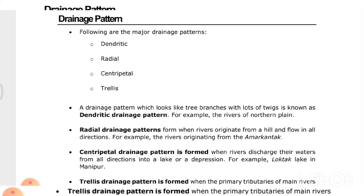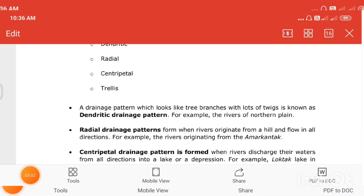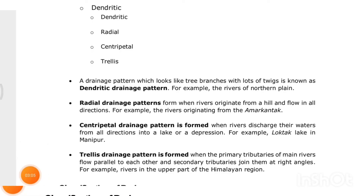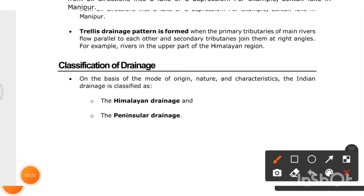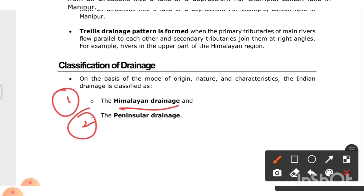The trellis drainage pattern is formed when the primary tributaries of the main river flow parallel to each other, and secondary tributaries join them at right angles — for example, rivers of the upper Himalayan region. On the basis of mode of origin, nature, and characteristics, Indian drainage is classified as Himalayan drainage and Peninsular drainage.